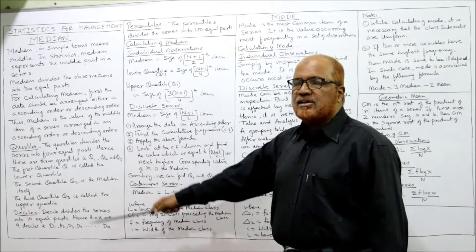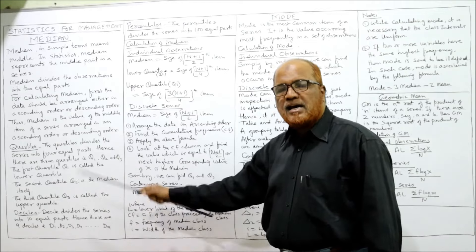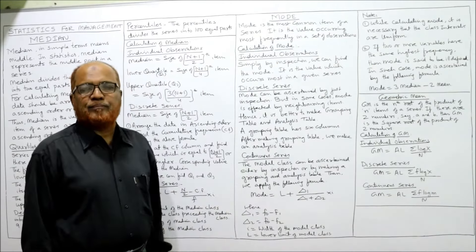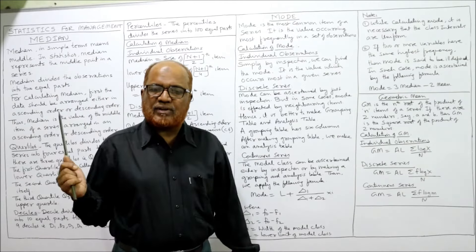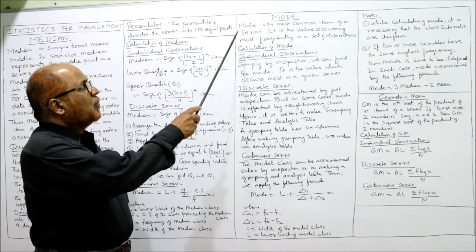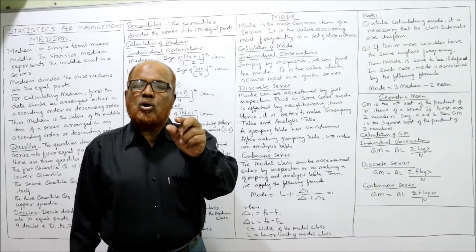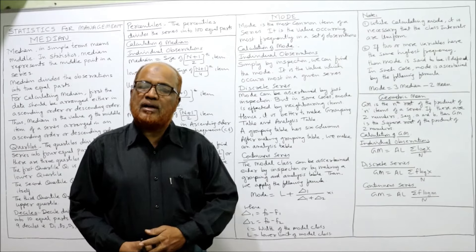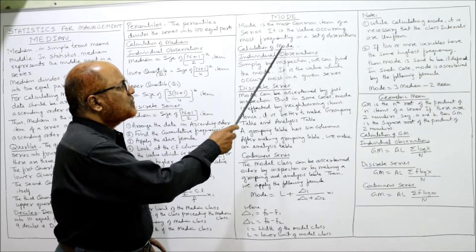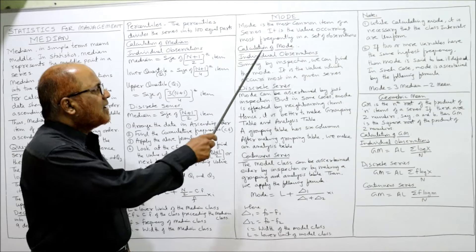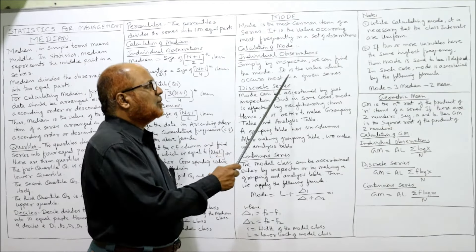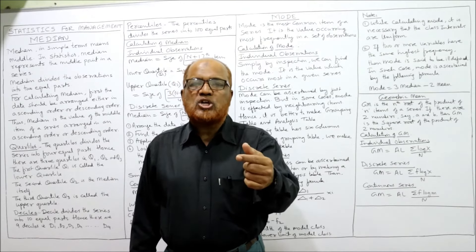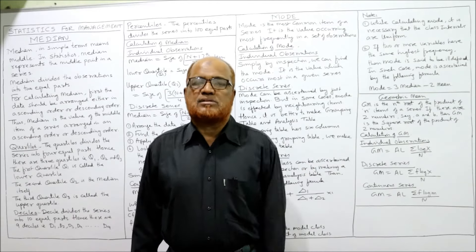That completes the explanation of median, quartiles, deciles, and percentiles, along with the formulas for calculating median. Now, moving to mode. Mode is the most common item of a series — the item which occurs most frequently. The value occurring most frequently in a set of observations is called the mode. For individual observations, we find the mode simply by inspection: the value occurring the most number of times is the mode — no formula needed.